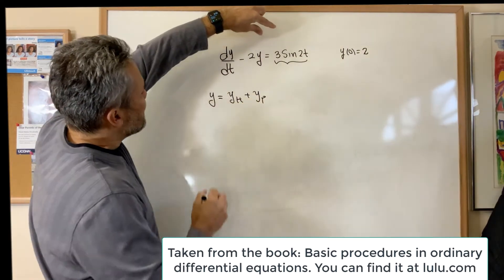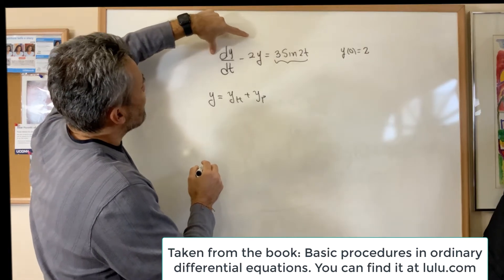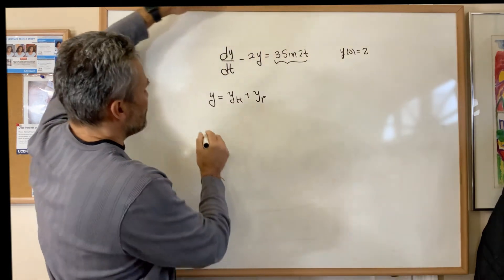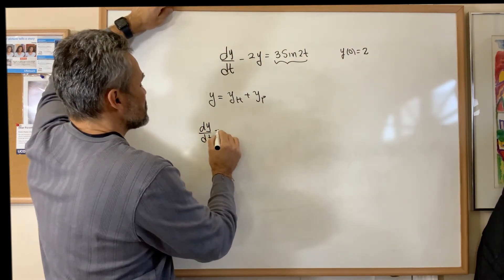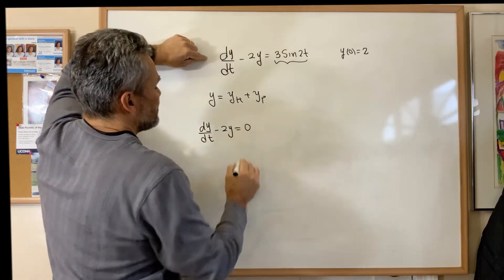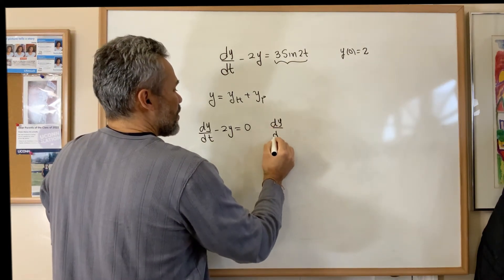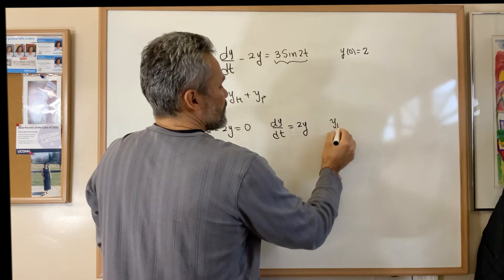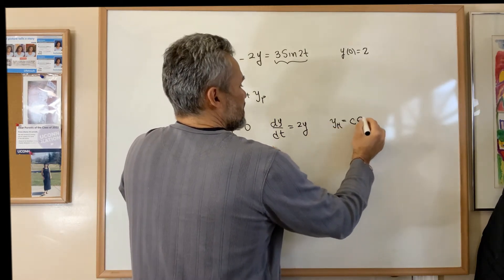We find the homogeneous equation associated with this non-homogeneous equation by making the non-homogeneous part equal to zero. This is the homogeneous equation associated with the non-homogeneous linear equation. To solve this, we write it like this, and we know that the general solution of this differential equation is a constant e to the 2t.